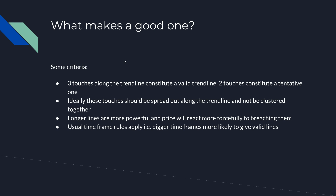So what makes a good trend line? The sort of industry standard rule is at least three touches make a valid trend line; two touches make a speculative or tentative one. These touches should be spread out fairly evenly along the trend line, or at the very least not be clustered all in one place.